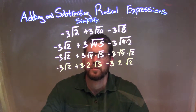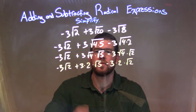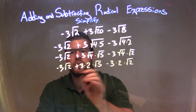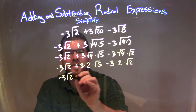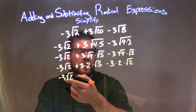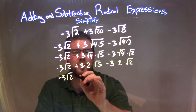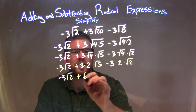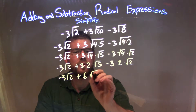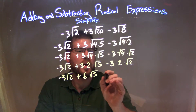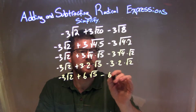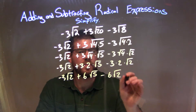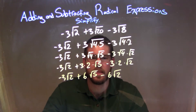So now let's simplify this a little bit. The 3 times the 2 is a 6, so let's rewrite this again. Negative 3 square root of 2 stays by itself. 3 times 2 is 6, times the square root of 5, and minus 3 times 2 which is 6, times the square root of 2.